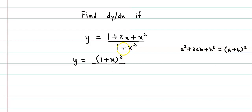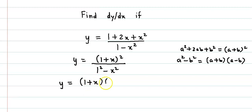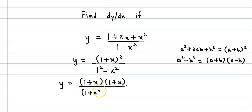The denominator is of the form 1 square minus x square, that is a square minus b square, and this could be factorized as a plus b into a minus b. So applying this formula, we have 1 plus x into 1 minus x.